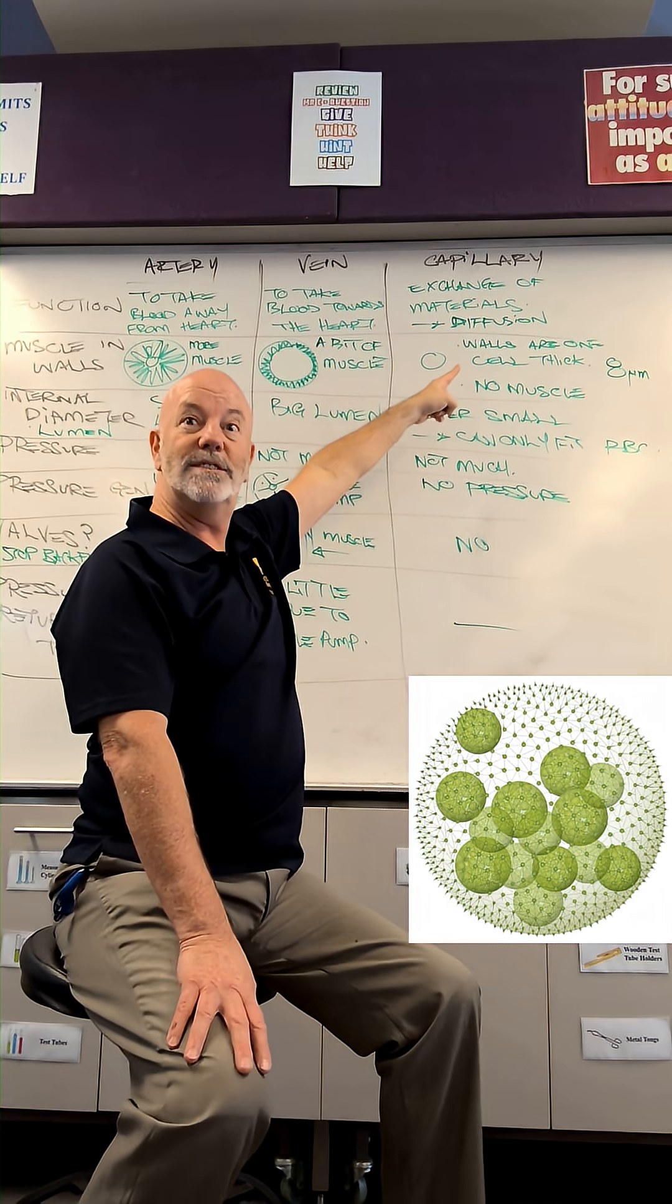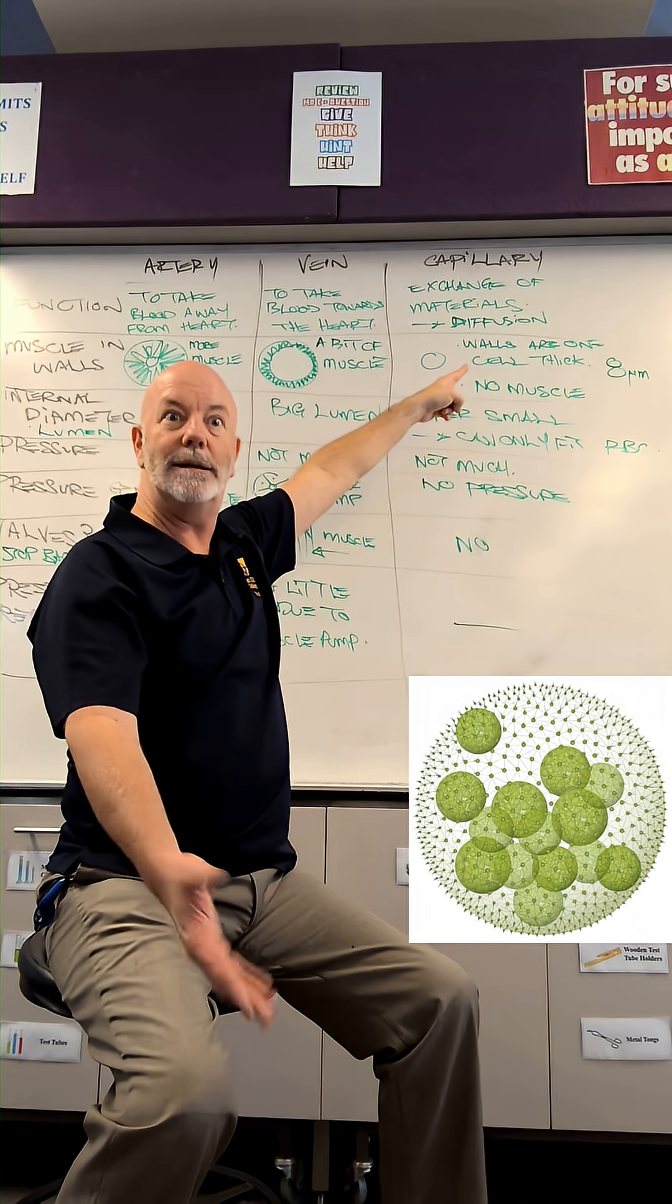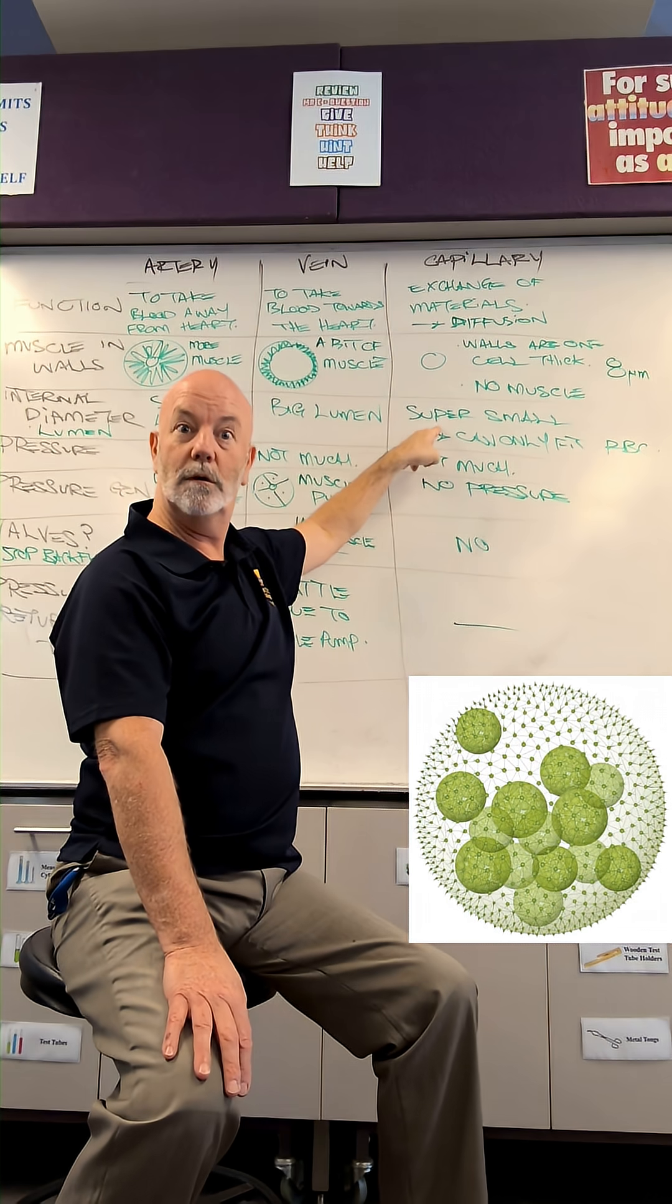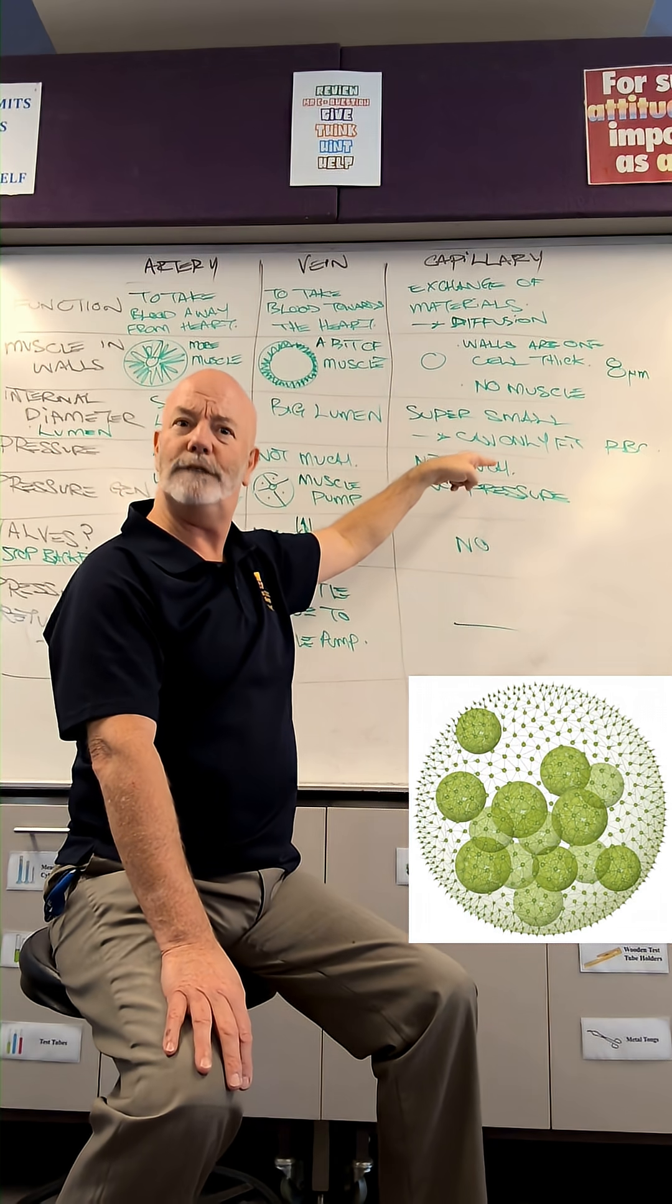Capillaries, being only one cell thick, which is about 8 micrometers, have no muscle in the walls and a very tiny, super small lumen. It can only fit a red blood cell.